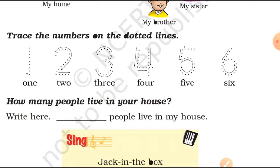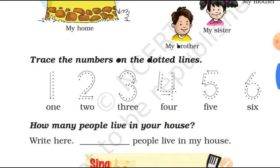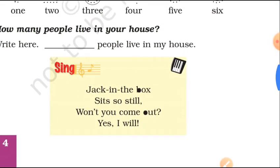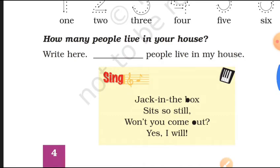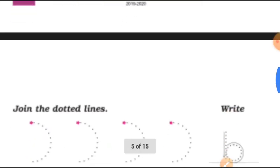So, you will make them. You trace them on the dotted lines. And then, you will write here, how many people live in your house. Six people live in my house, you can say.